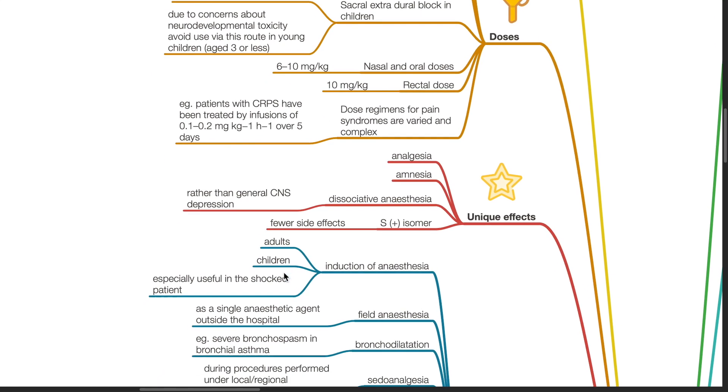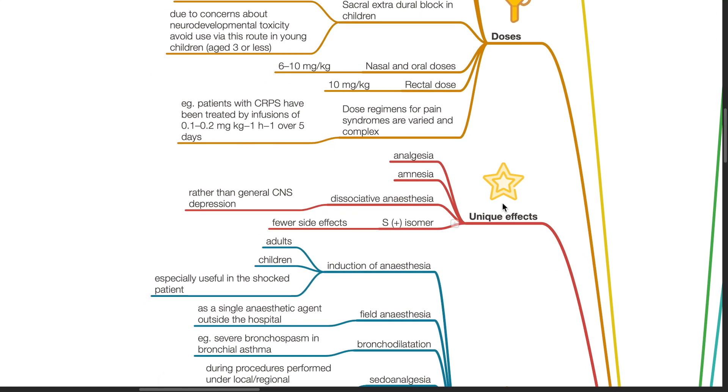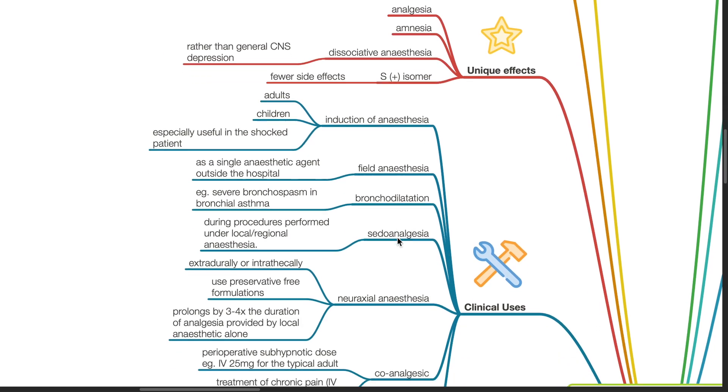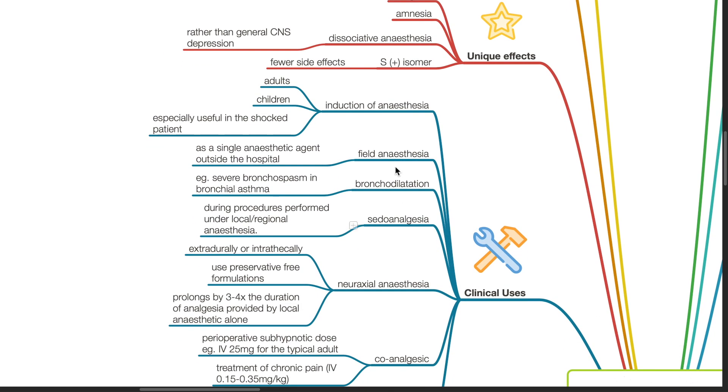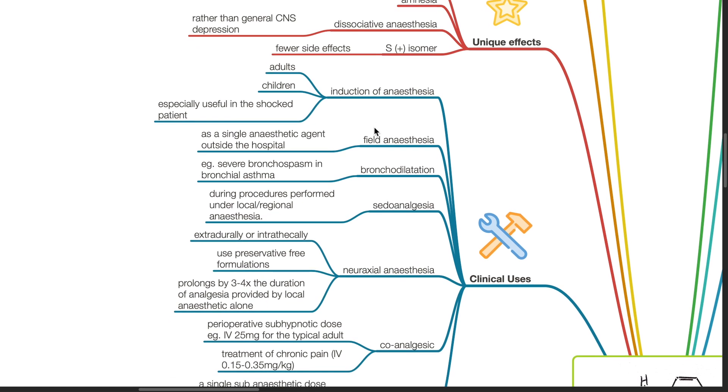Unique effects of ketamine include analgesia, amnesia, dissociative anesthesia rather than general CNS depression. The S-dextroisomer of ketamine has fewer side effects. Clinical uses of ketamine include induction of anesthesia in adults and children. It is especially useful in a shock patient. Field anesthesia as a single anesthetic agent outside the hospital. For bronchodilation, such as in severe bronchospasm in bronchial asthma.